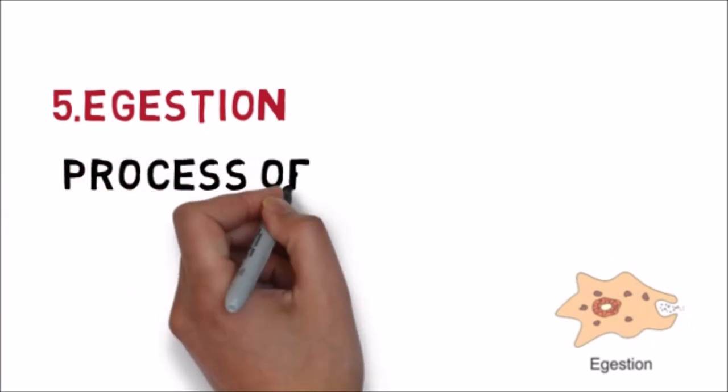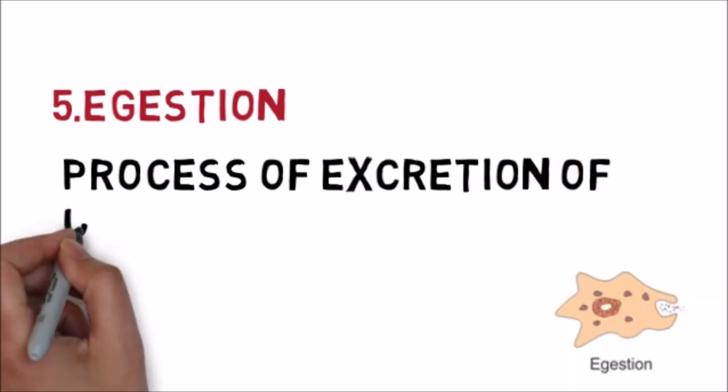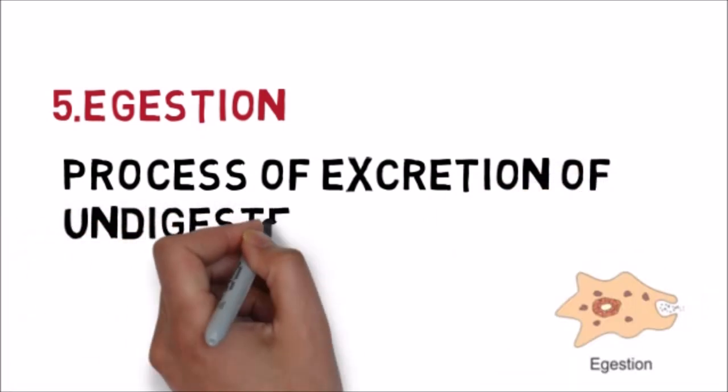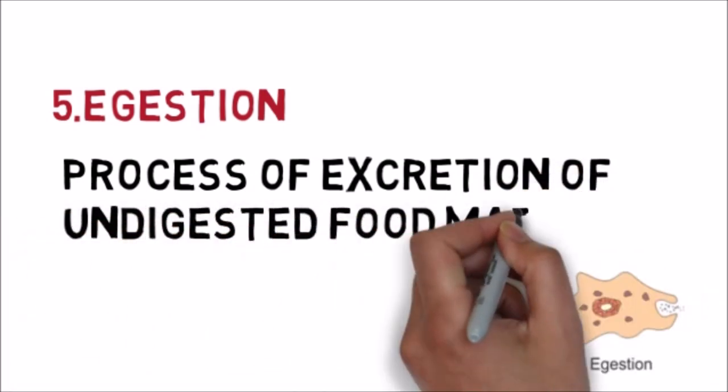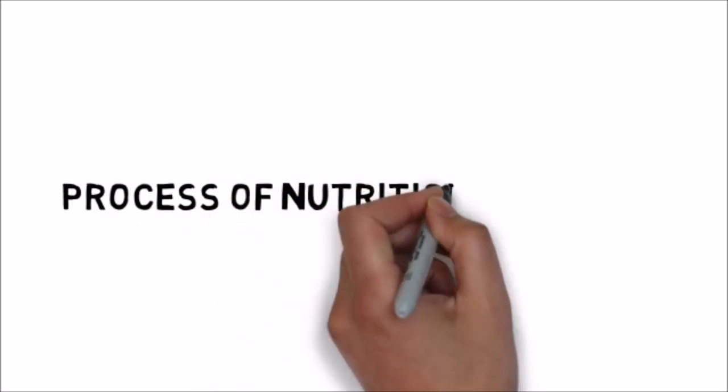After assimilation, any undigested food is ejected out of the amoeba's body via the process of egestion. Egestion is the process of excretion of undigested food material. In amoeba, this process is carried out by rupturing the cell membrane to remove undigested food material from its body.